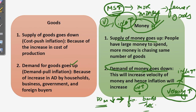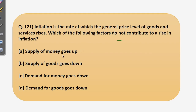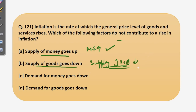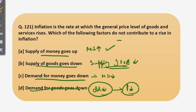Now answering the question: option A — money supply increasing — leads to a rise in inflation, true. Option B — supply of goods going down — causes prices to go up, true. Option C — demand for money going down — increases velocity of money and raises inflation, true. Option D — demand for goods going down — causes prices to go down, so inflation goes down. This is not a reason behind the rise in inflation, so the answer is option D.